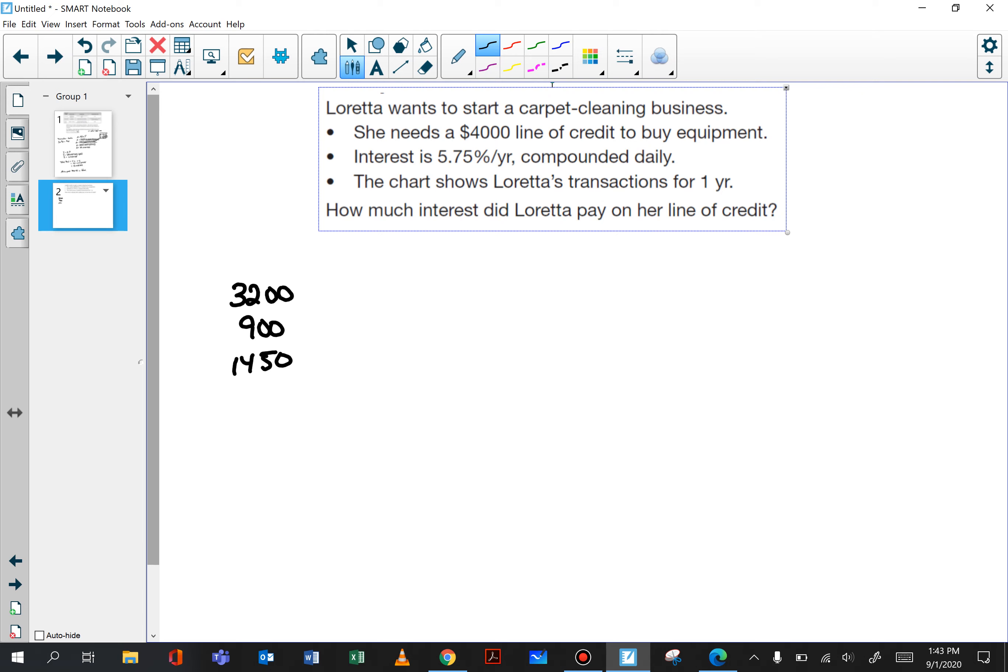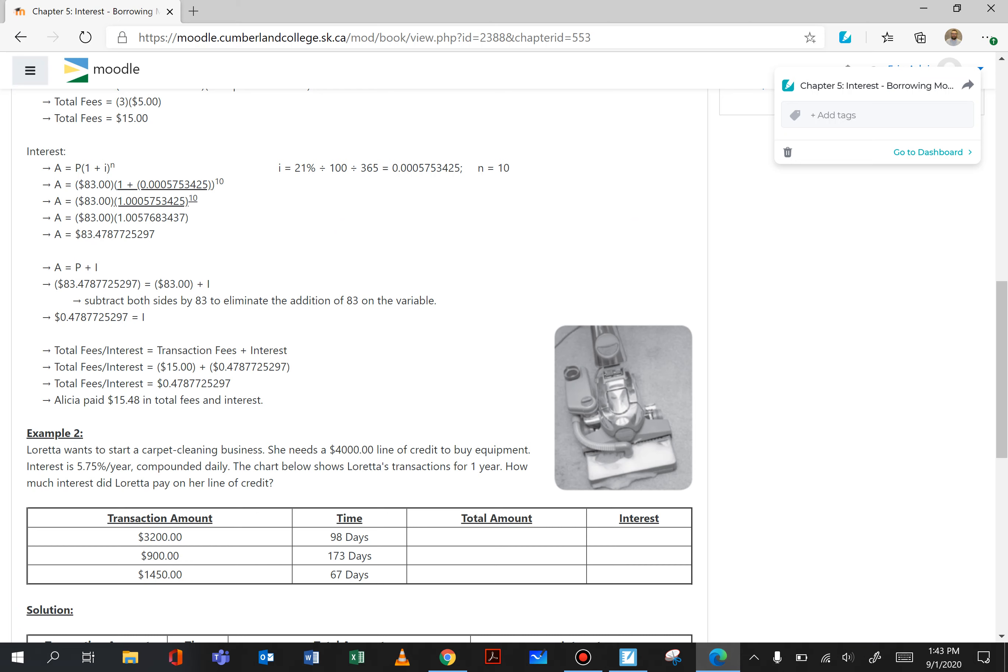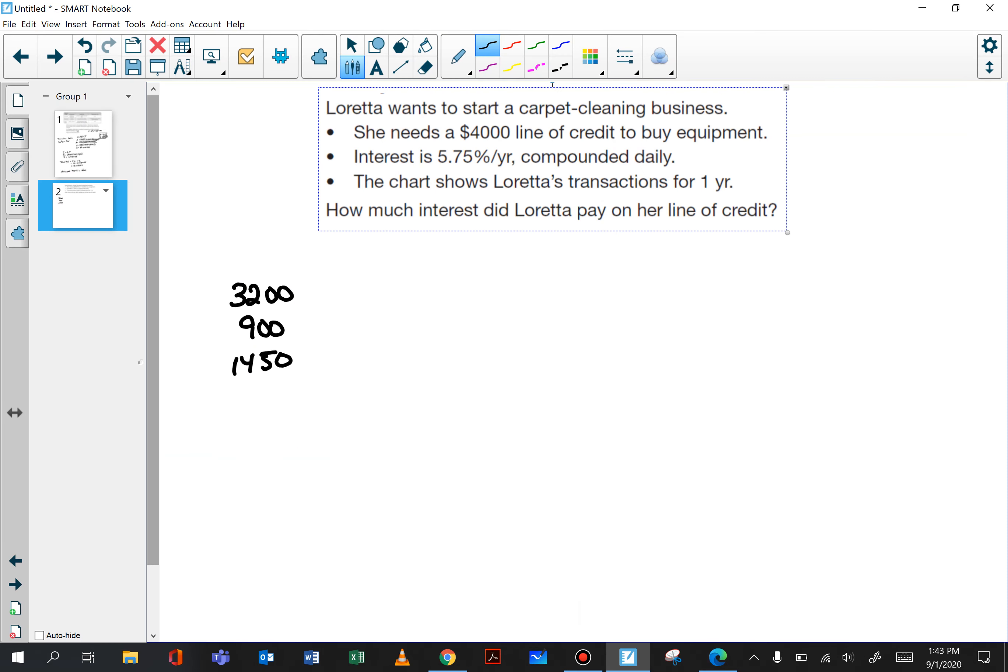Now we can't just add them together and calculate the interest because these were for different time frames. It was 98 days, 173 days, and then 67. So these were all days and these three were all the amounts.